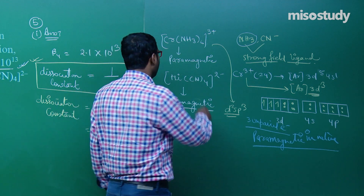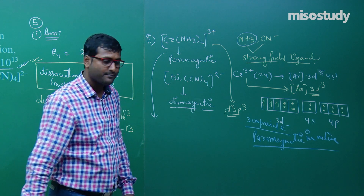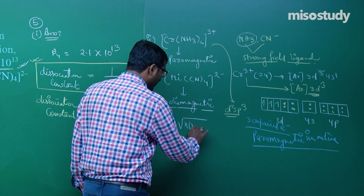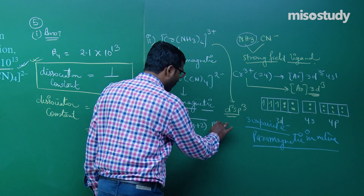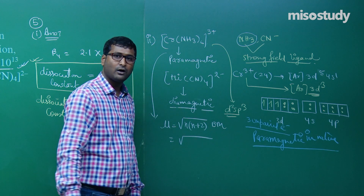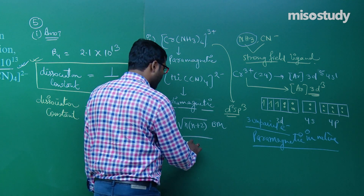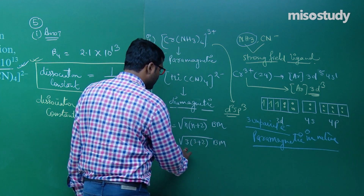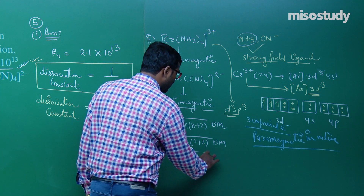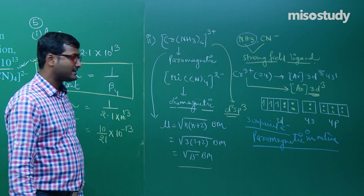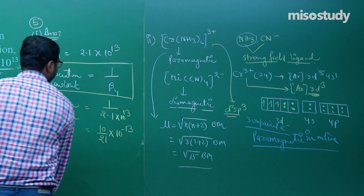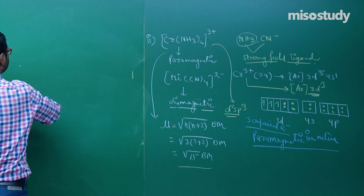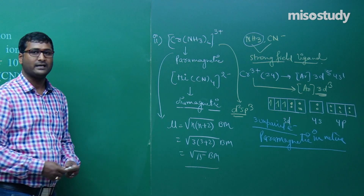If anyone asks how to find the magnetic moment: μ = √(N(N+2)) BM, where N = number of unpaired electrons. Here N = 3, so μ = √(3 × 5) = √15 BM. This explains why Cr(NH3)6^3+ is paramagnetic.